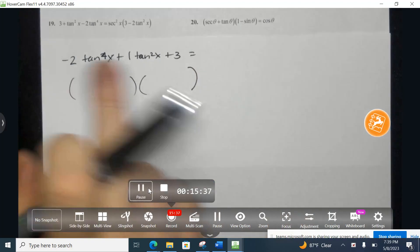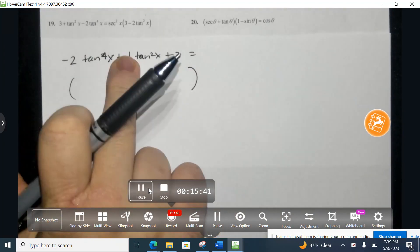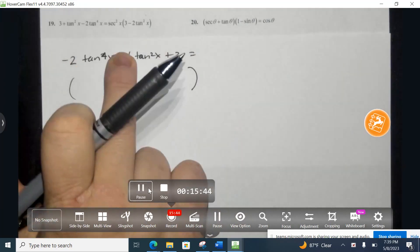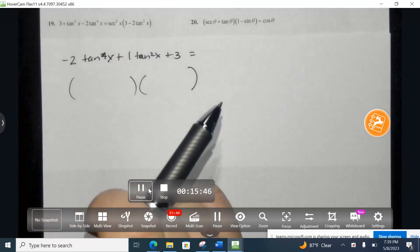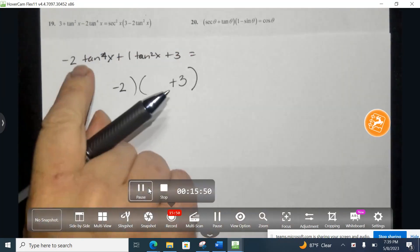So I'm thinking to myself, what two things multiplied to equal negative 6 and combined to give us a positive 1? And so that's going to be a positive 3 and a negative 2.